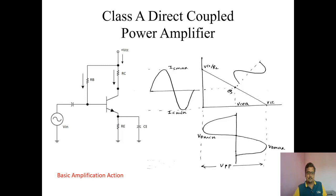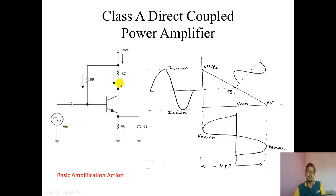The amplifier is like that. If I apply some input voltage, according to the change in input, the current from the supply changes. If input voltage increases, the transistor will turn on and take more current from VCC. If input voltage decreases, the transistor will go off and take less current from the supply. So this current is like the carrier signal and the input is like the modulating signal — the current increment or decrement is controlled by the input signal.